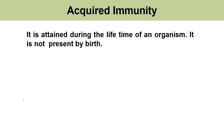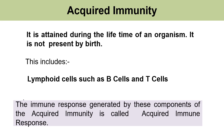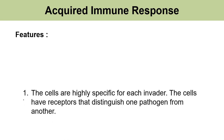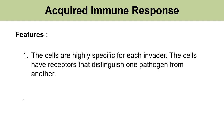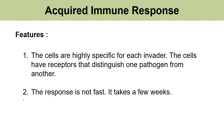Acquired immunity is not inborn; it is rather attained during the lifetime of an organism. This includes lymphoid cells such as B cells and T cells. The immune response generated by these components is called the acquired immune response. The cells are specific for each invader and their receptors distinguish one pathogen from another. The response is not fast — it takes a few weeks — but one advantage is that they have immunologic memory.